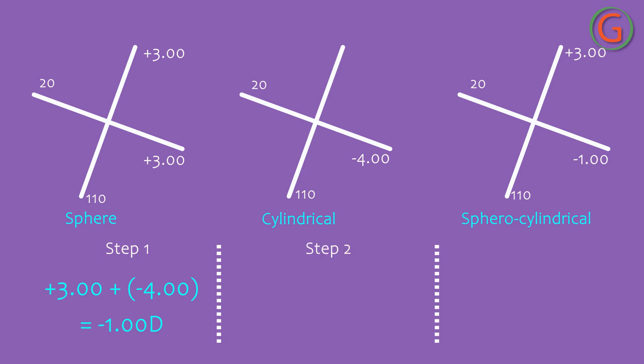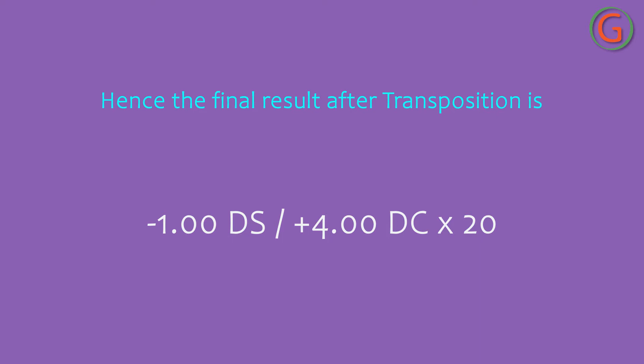Step 2: Change the sign of the cylinder power — minus 4.00 becomes plus 4.00. Step 3: Change the cylinder axis by 90 degrees. 110 degrees minus 90 degrees is equal to 20 degrees. Hence the values after transposition are: minus 1.00 diopter spherical with plus 4.00 diopter cylindrical at axis 20 degrees.